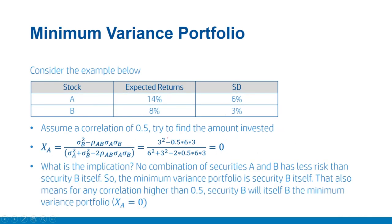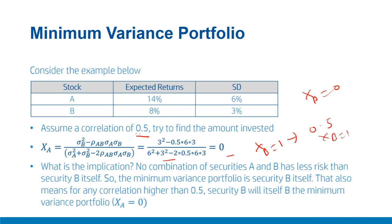Now let us assume a correlation of 0.5 and compute the expression. Putting correlation = 0.5, we find xa = 0. This means no combination of securities A and B has less risk than security B itself, so the global minimum variance portfolio is security B. For any correlation higher than 0.5, the global minimum variance portfolio will be obtained for xa less than 0, meaning in the absence of short selling, xa = 0 and xb = 1 — security B remains the global minimum variance portfolio.